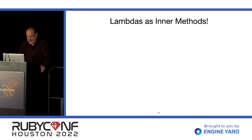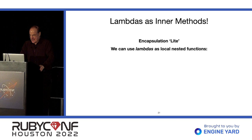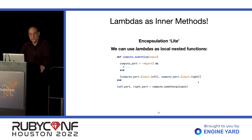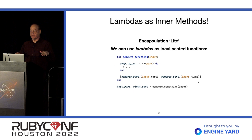I call it 'encapsulation light' because it's on a very micro level. We can use Lambdas as local nested functions. Here we have a method where we want to apply the same computation to two parts of the input. So we create a Lambda to do that computation and then call it twice. For multiple return values in Ruby, you create an array and return it, then deconstruct it with a comma-separated list of variable names.